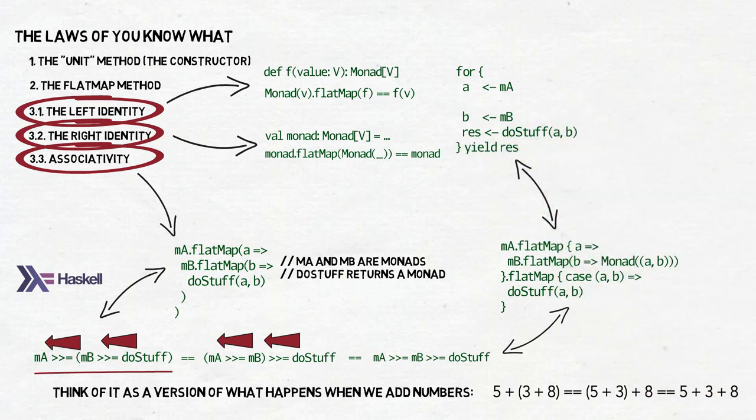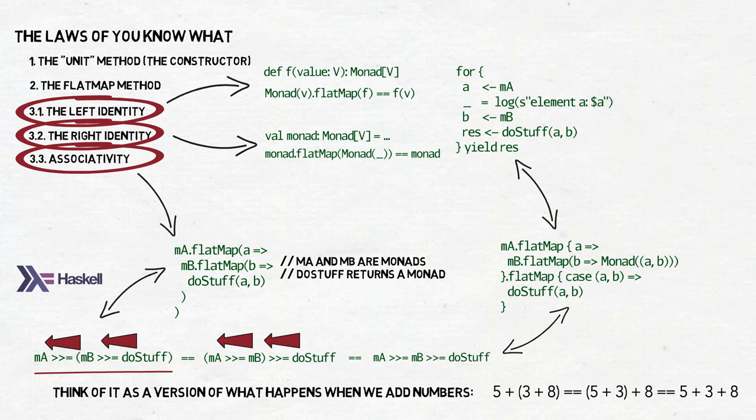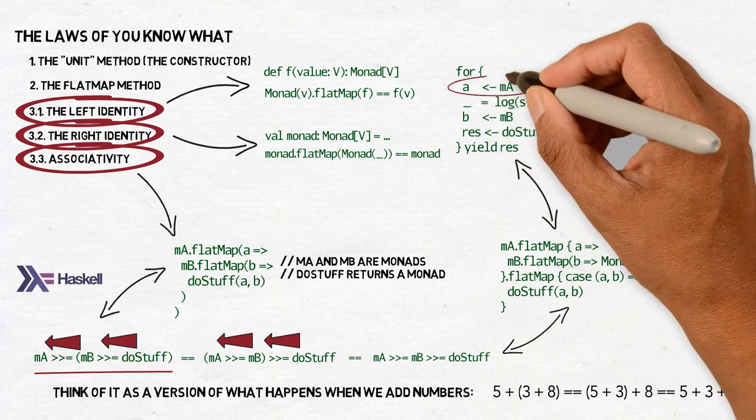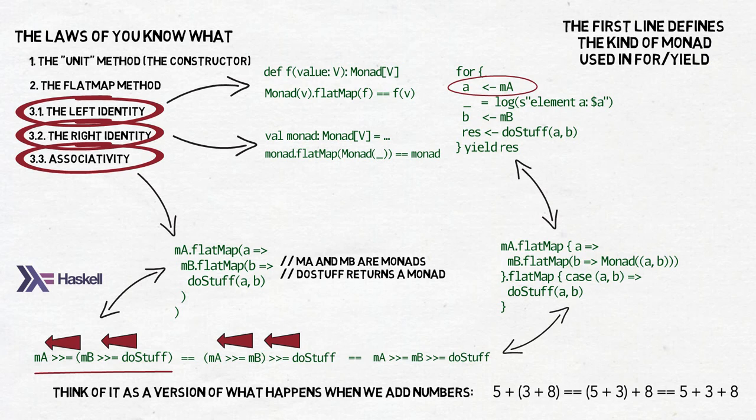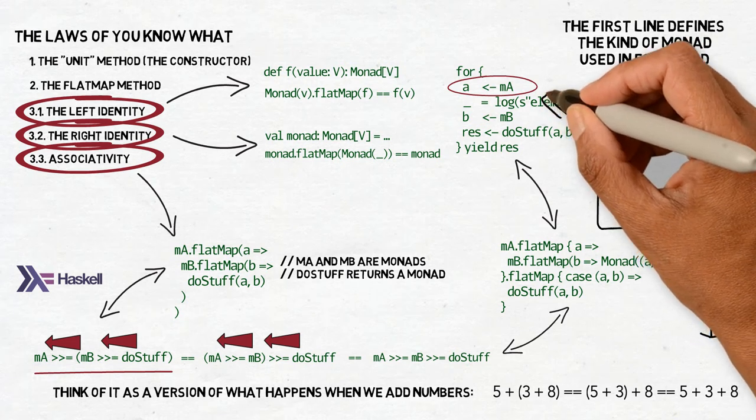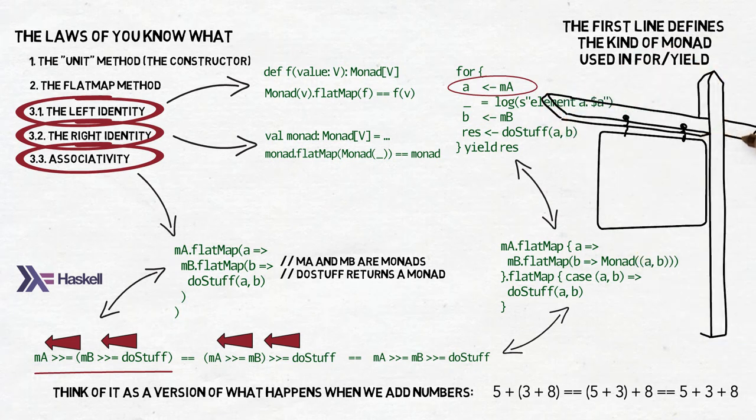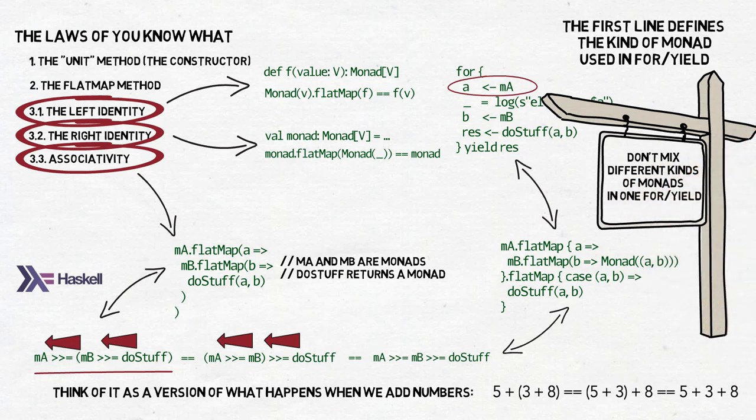In between the left arrow lines, we can insert standard assignment lines for log statements, as in the original example, or more often for simplifying computations and to store intermediate results in values, which then can be used as arguments for consecutive function calls. There's one or maybe two limitations there. The first line in the for-yield has to be a left arrow line, because this is how the Scala compiler figures out what kind of monad to use. After all, option flatmap requires us to return option, either flatmap requires us to return either, and so on. This is determined by the first line of for-yield. And also it means that you have to be careful not to mix different kinds of monads in one for-yield. It's very easy to do and it leads to cryptic compilation errors. But at least they are compilation errors and not some tragedy happening at the runtime.